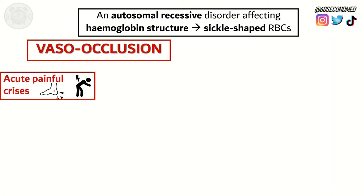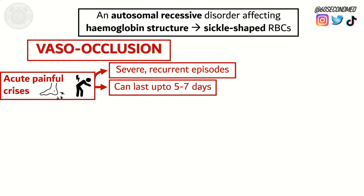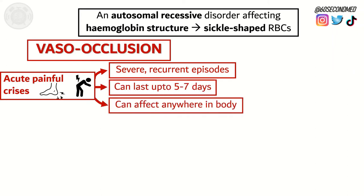For example, an acute painful crisis can occur — severe, recurrent episodes of pain that last up to 5-7 days. These can affect anywhere in the body, from central locations to the outer extremities.